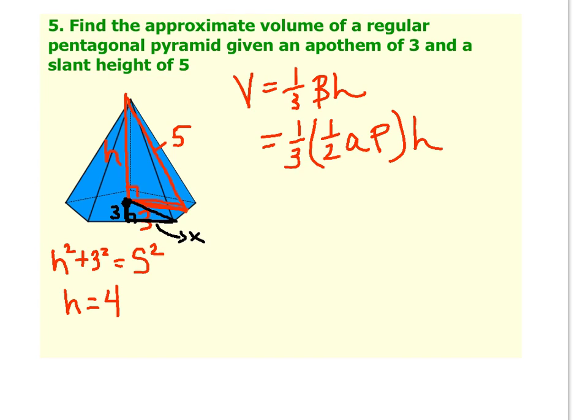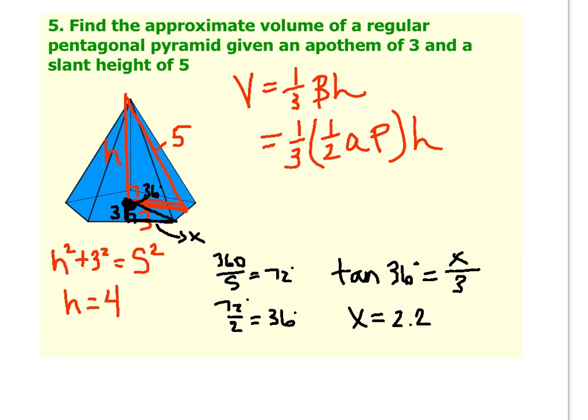So we're going to have to involve the central angle. The central angle, remember, is 360 divided by five, which is 72 degrees. And then you have to take that in half, 72 divided by two, to get this angle right here, which is 36 degrees. So if I have a right triangle with an angle of 36 degrees, in order to find x, I'm going to have to use SOHCAHTOA. So because I have x and three, that's going to involve tangent. So the tan of 36 equals opposite, which is x, over adjacent, which is three. And if I put that in my calculator, three times the tangent of 36 degrees should be about 2.2. Now remember, in the directions we are approximating, so it's fine to round.